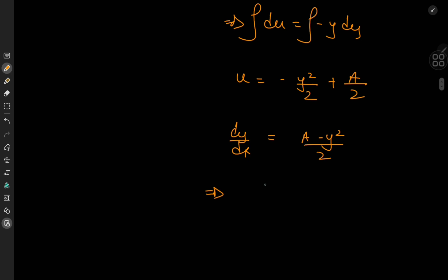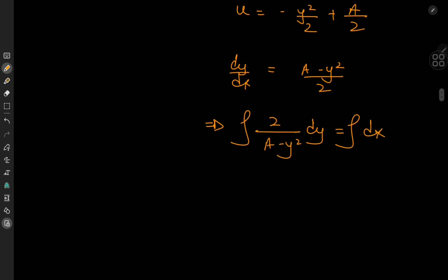And this implies that, again, we have a separable differential equation. So we can write this as 2 divided by a minus y squared dy equal to dx, and we're integrating with respect to the variables either side. Now on the right hand side, we just have x plus b.